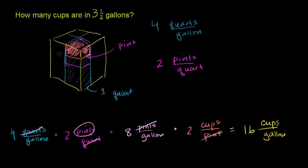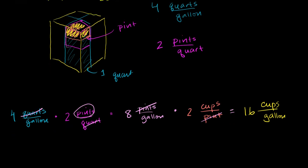We just figured out how many cups there are per gallon. This section is exactly 1 sixteenth of this entire cube. But we haven't answered our question. We want to figure out how many cups there are in 3 and a half gallons.